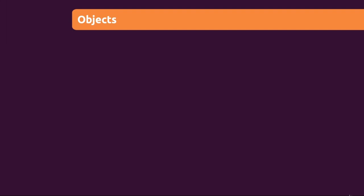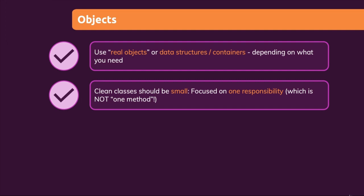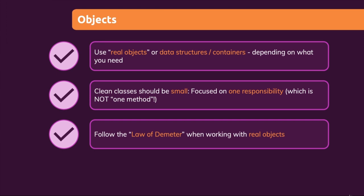When working with objects, especially in an object-oriented programming style, you should be able to differentiate between real objects and objects which only hold some data — you could call these data structures or data containers. Depending on what you need, it's okay to use either of these two kinds of objects, but you should not mix them. Either have real objects with an API of methods which are exposed, or just use data containers. Mixing them often results in unclean code. Also follow the Law of Demeter when working with real objects, since that ensures you're not diving too deeply into objects and the API of only loosely related objects, which often leads to code that is hard to understand and hard to maintain.